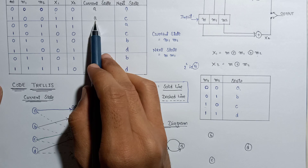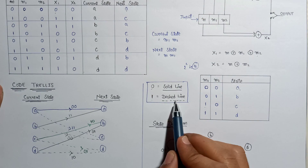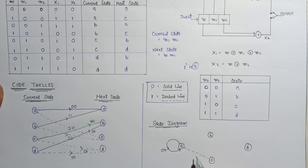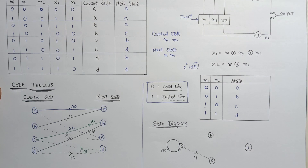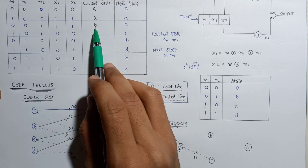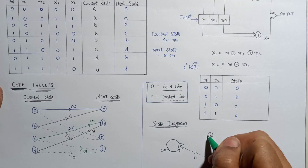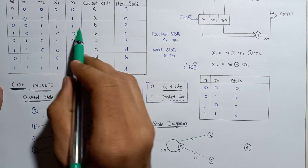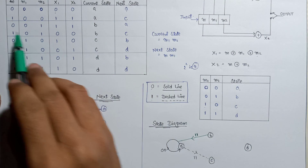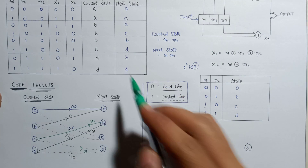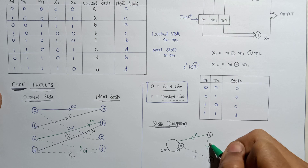If the current state is A and the input message bit is 1, then the next state is C. Since the input is 1, we use dashed lines, and the output is 11. If the current state is B and the input message bit is 1, then the next state is C, and the output is 00.